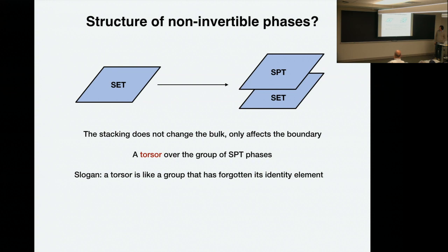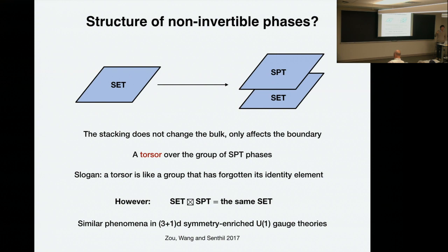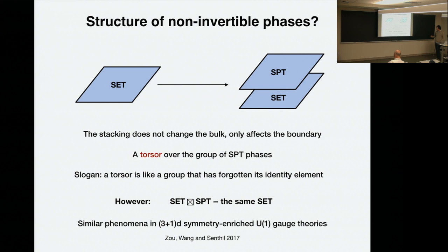So the bulk stays the same. However, we change the boundary of this SET phase. The stacking does not change the bulk — in some cases it's possible for the SET to just dissolve the SPT. That's what I want to study — when that happens. So as Dominic just said, sometimes the stacking does not change the bulk but only affects the boundary. But sometimes, in general, this is like a torsor — naively it's a torsor over a group of SPT phases. It's like a sloppy way of defining what torsor means — a group that just forgets its identity.